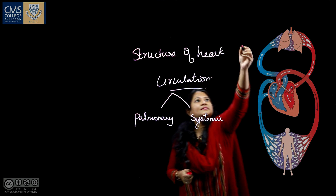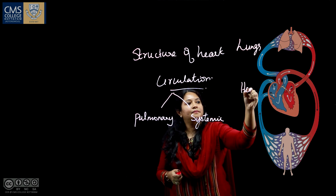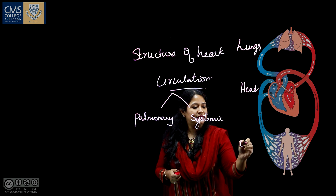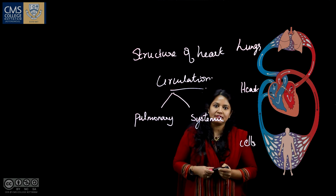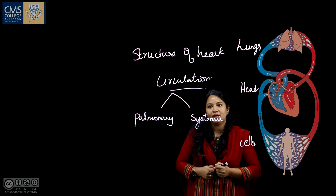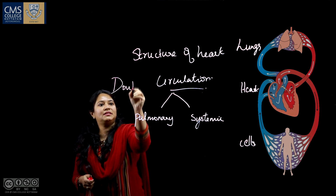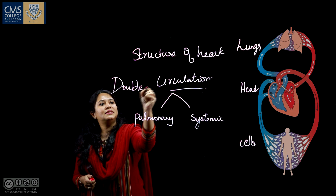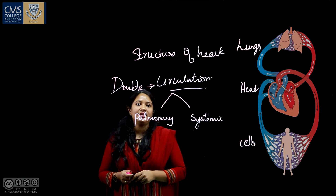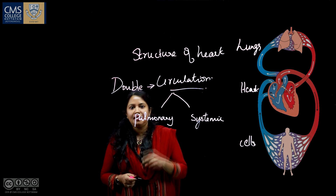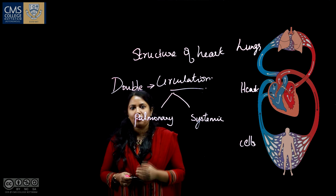This is the lungs, this is the heart, and this is the cells. This type of circulation is called double circulation. Double circulation means the circulation that takes place in the heart in a cycle, in two types.